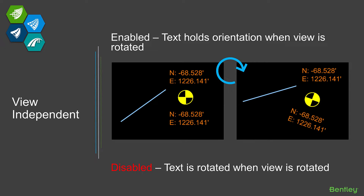...when you rotate a view, that text will stay in the orientation that it was in the view. In this case, those top labels — the ones above the point — were created with that option enabled. Notice on the right side after rotating the view, that text is still horizontal. If view independent is disabled and you rotate the view, the text is going to rotate with the view, as we see on the right side.